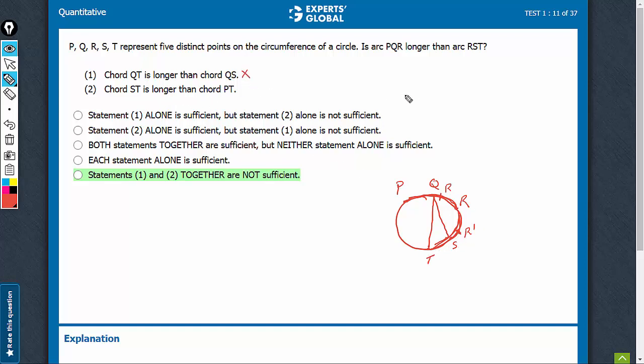Let's look at statement two. Statement two says that ST is longer than PT, meaning P and T are closer and S and T are distant. But nothing has been said about Q and R, so various possibilities exist. If Q and R are very nearby, PQR becomes smaller and RST becomes much bigger. In this case, we get no as an answer.